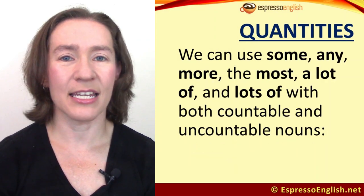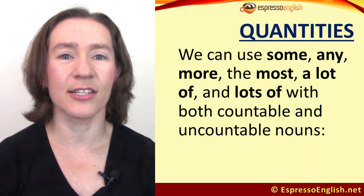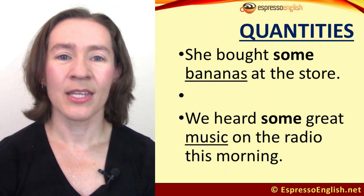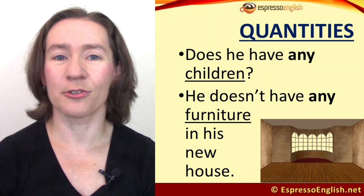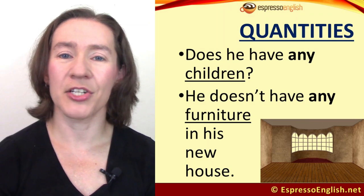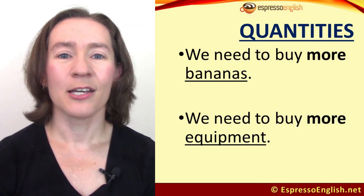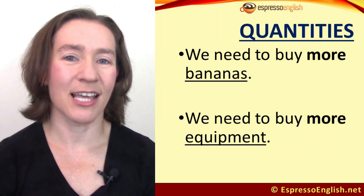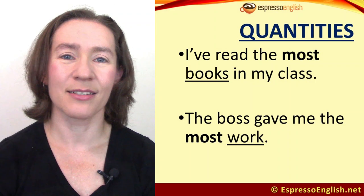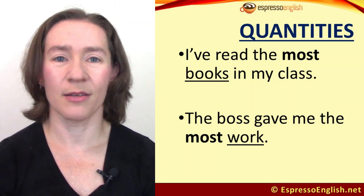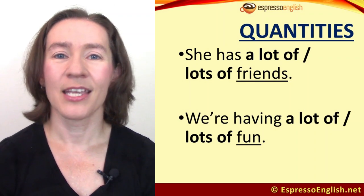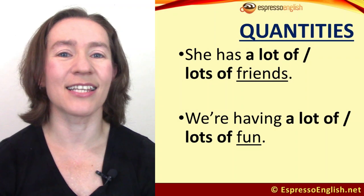We can use some, any, more, the most, a lot of, and lots of with both countable and uncountable nouns. For example: 'She bought some bananas at the store' (countable). 'We heard some great music on the radio this morning' (uncountable). 'Does he have any children?' (countable). 'He doesn't have any furniture in his new house' (uncountable). 'We need to buy more bananas' (countable). 'We need to buy more equipment' (uncountable). 'I've read the most books in my class' (countable). 'The boss gave me the most work' (uncountable). 'She has a lot of friends' (countable). 'We're having a lot of fun' (uncountable).